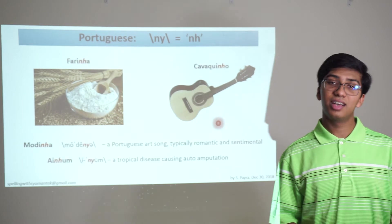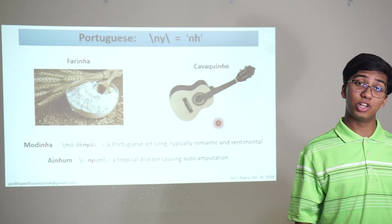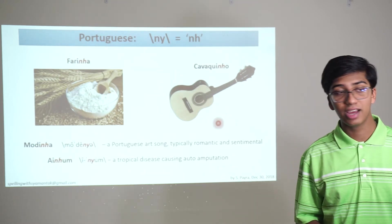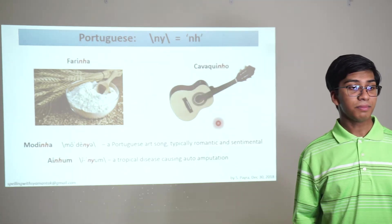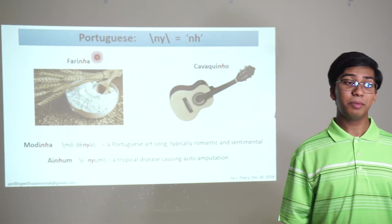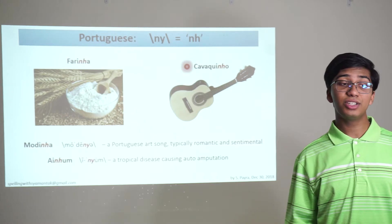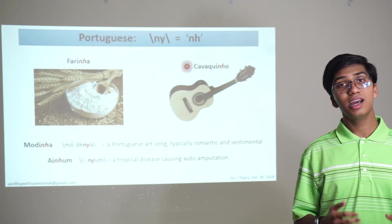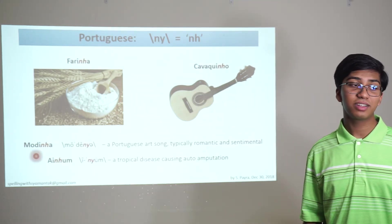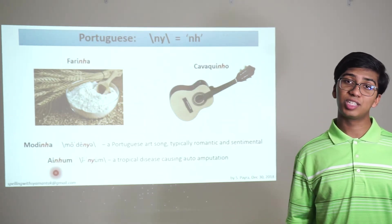Then you have the ñ sound. Remember that in Italian the ñ sound was spelled with GN — like gnocchi or agnolotti? In Portuguese, the ñ sound is spelled with NH instead. You have farinha — cassava meal or flour, related to Latin farina meaning meal, like farinaceous. You have cavaquinho — a Brazilian stringed musical instrument somewhat smaller than a ukulele. You have modinha — a Portuguese art song. And ainhum — a tropical disease. All of these have the ñ sound spelled with NH.